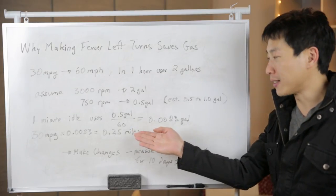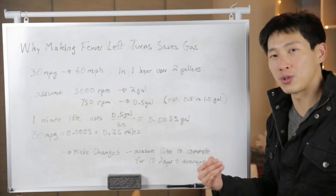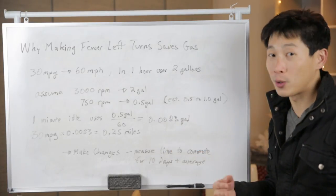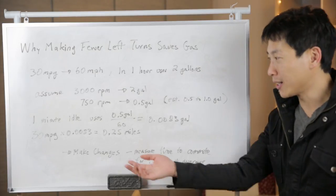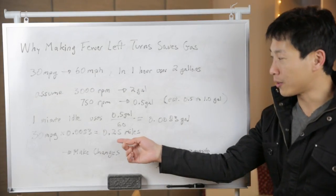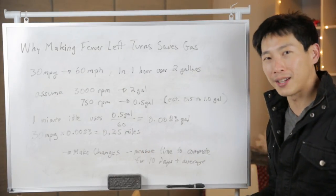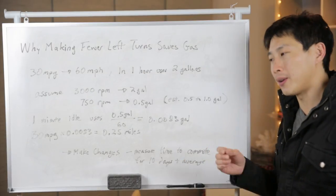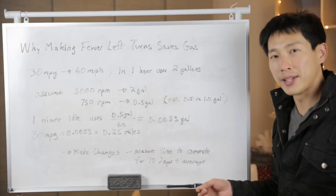We just divide half a gallon by 60 to get how much gasoline we're going to consume every single minute. This is 0.0083 gallons. Going back to your car getting 30 miles per gallon, multiply this and that together, you're going to get 0.25 miles. So your car idling for one minute sitting there, you could have traveled a quarter mile instead.